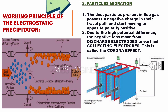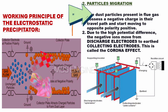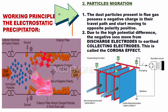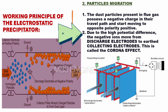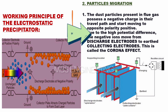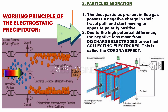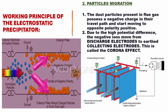The second step of the electrostatic precipitator's working principle is particle migration. The dust particles present in flue gas possess a negative charge in their travel path and start moving to the opposite polarity — positive. Due to the high potential difference, the negative ions move from discharge electrodes to earth collecting electrodes. This is called the corona effect.